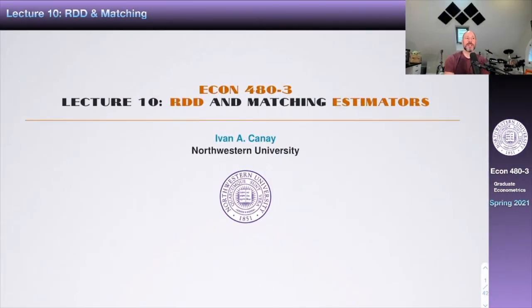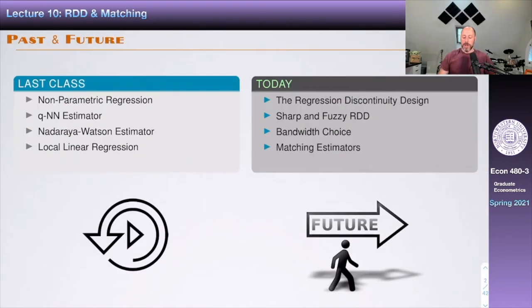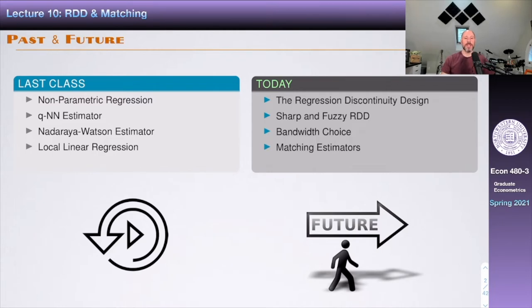Let's start lecture number 10. Today we're going to talk about RDD, which stands for Regression Discontinuity Design, and Matching Estimators. To recap, last class — which happened before the midterm — we talked about nonparametric estimation of conditional expectations. We discussed nonparametric regression generally, the K-nearest-neighbors estimator, the Nadaraya-Watson estimator, and the Local Linear Regression estimator. These were all nonparametric methods to estimate something like the expected value of Y conditional on X.